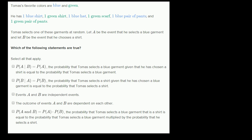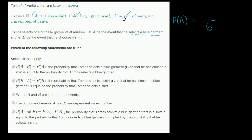So let's just calculate these things ahead of time before we even look at the statements. The probability of A is the probability that he selects a blue garment. There are six equally likely outcomes, and three of them involve selecting a blue garment. So he has a 3/6, or one half, probability of selecting a blue garment.